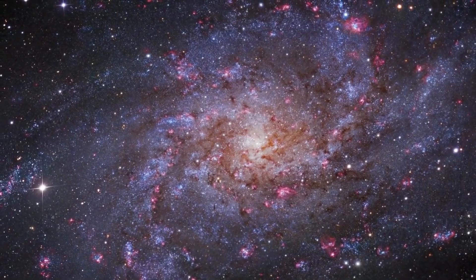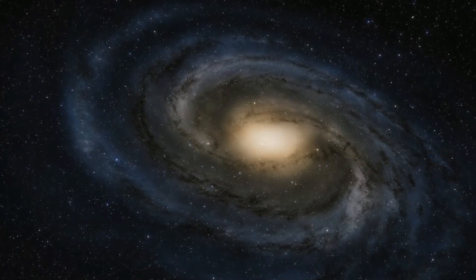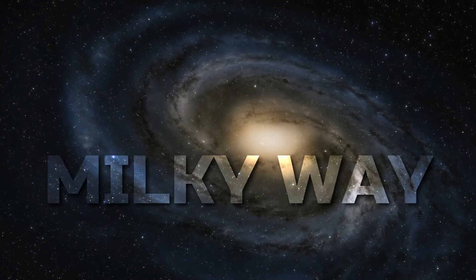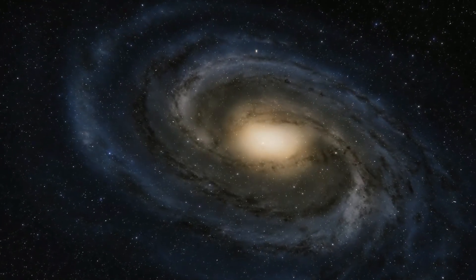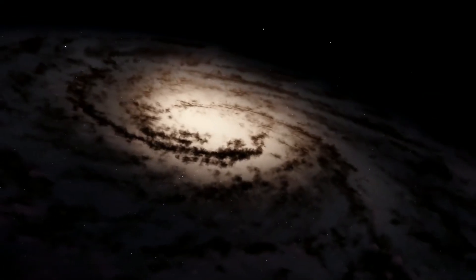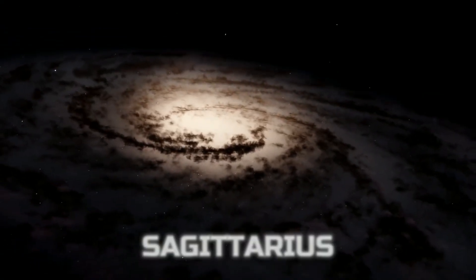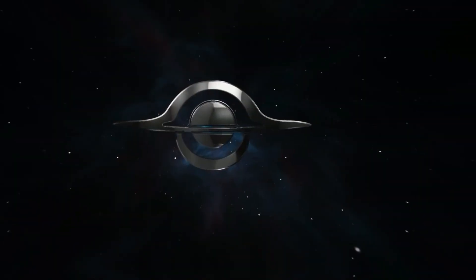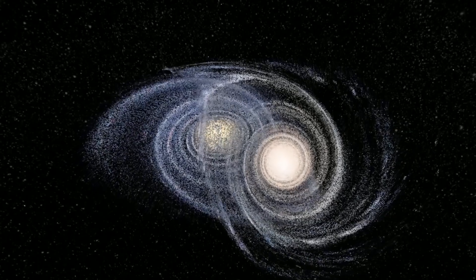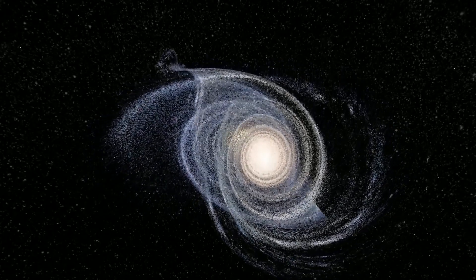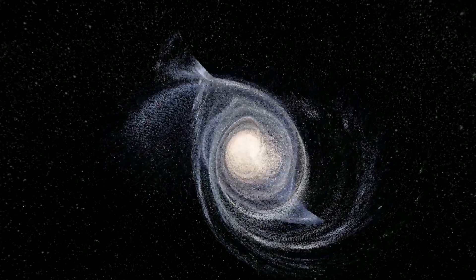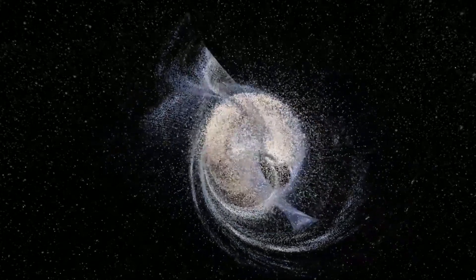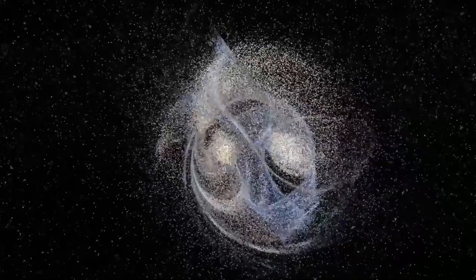Let's get ready for the ultimate cosmic showdown. In one corner, we have the mighty Milky Way, with its spiral arms and countless celestial bodies. And in the other corner, we have Sagittarius, a feisty dwarf galaxy that's not afraid to take on a giant. For over a billion years, these two galaxies have been hurtling towards each other, locked in a cosmic dance of destruction. And what happens when these finally collide is nothing short of mind-blowing.